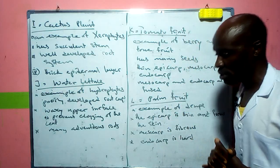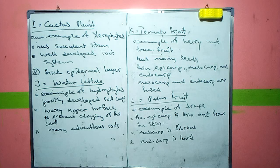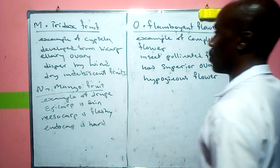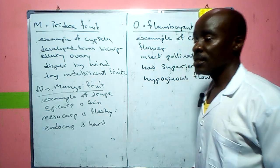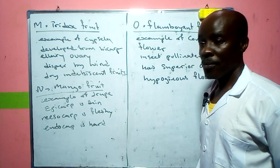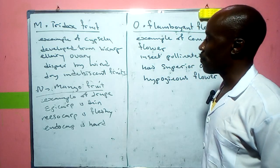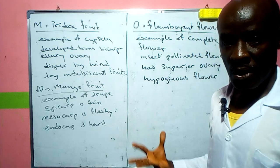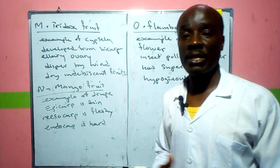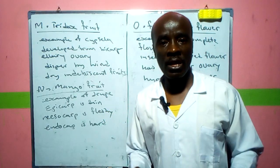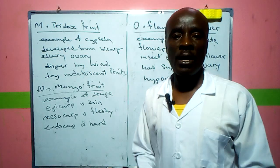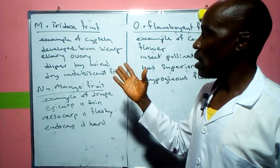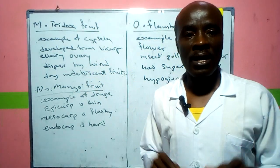Specimen M is an example of a cypsela fruit, which develops from a capillary ovary and is wind-dispersed. Most of these fruits have a pappus, which helps them to be carried by the wind. In this case, it has hair-like pappus.